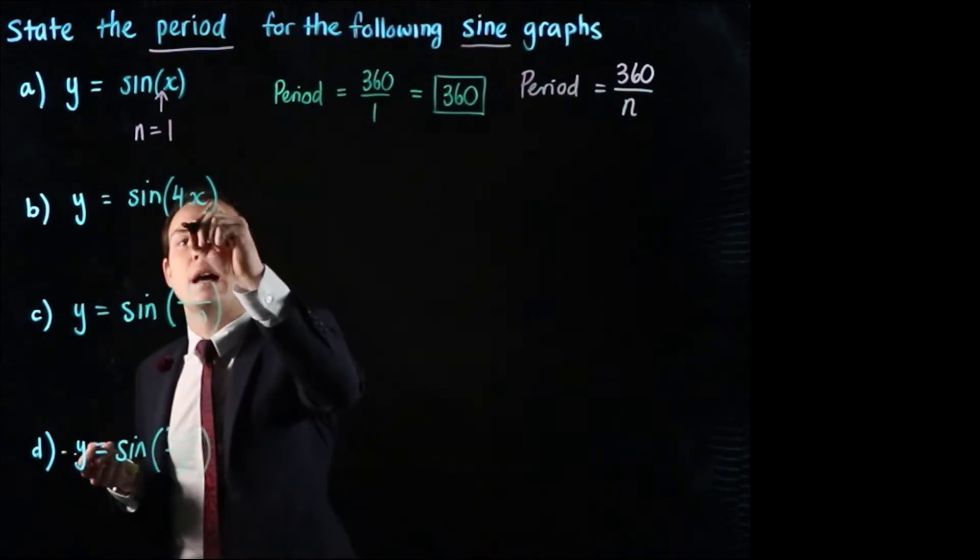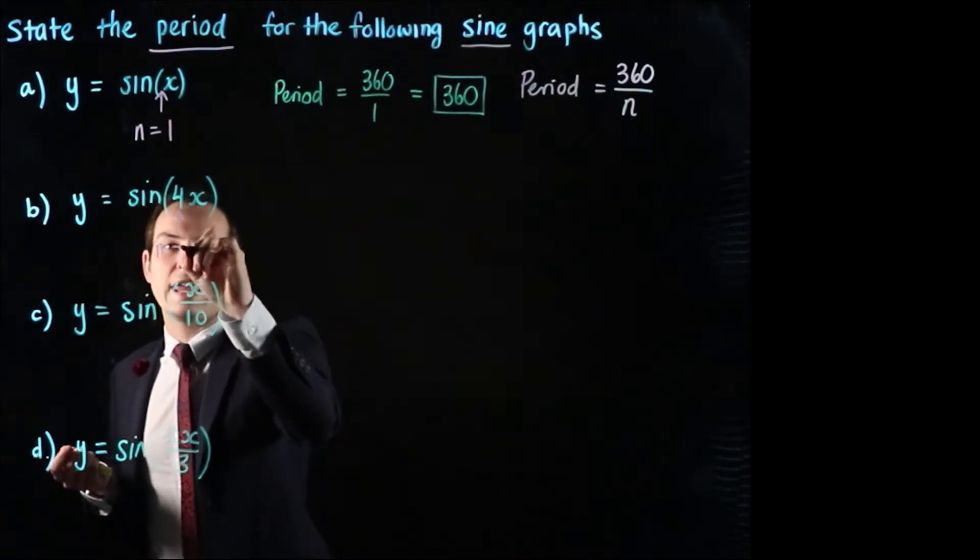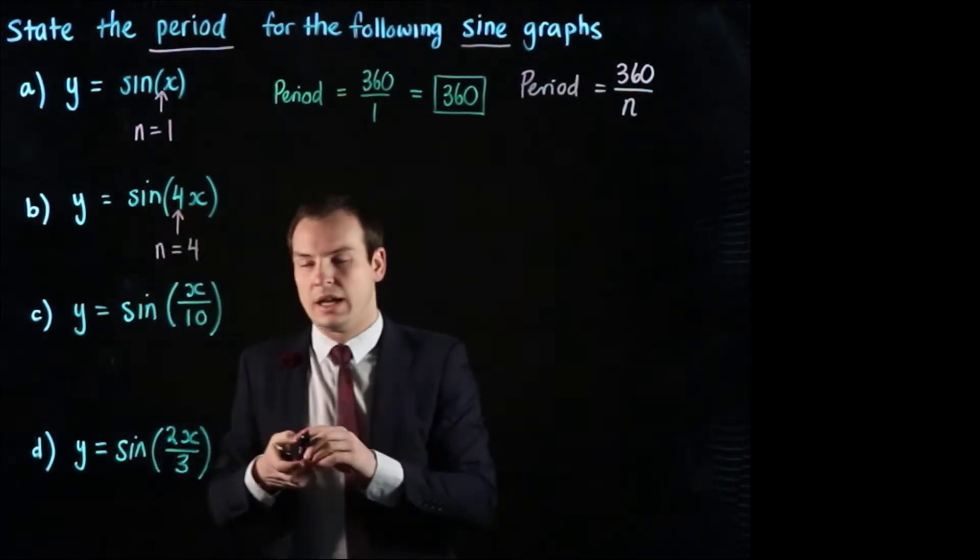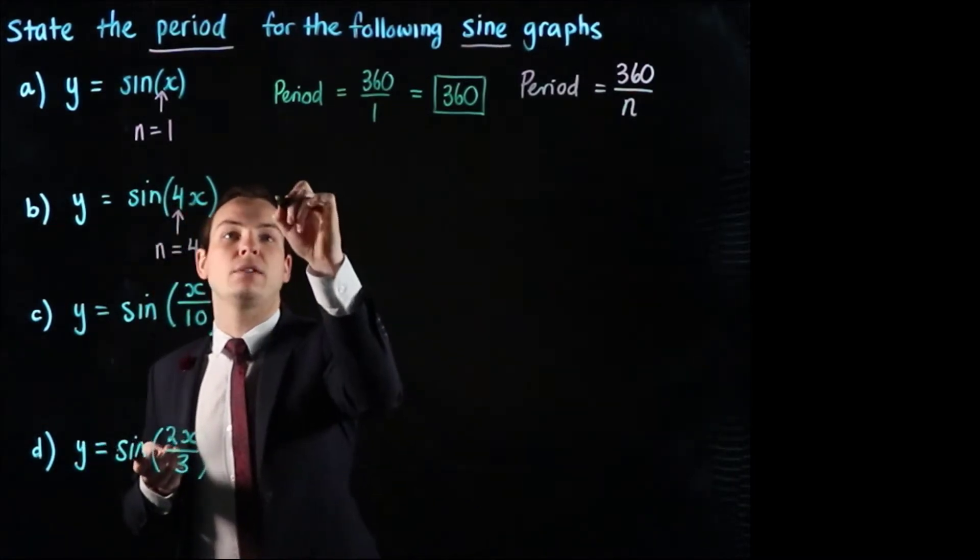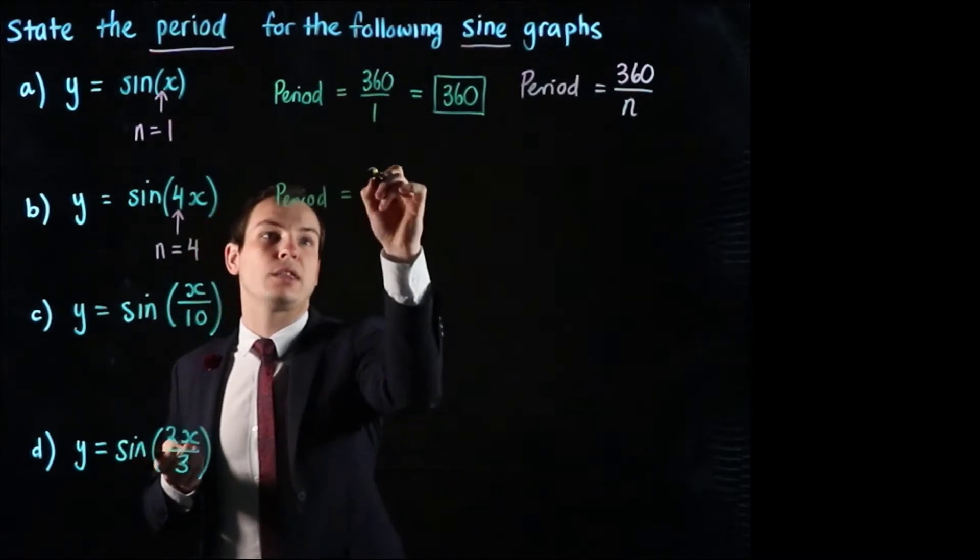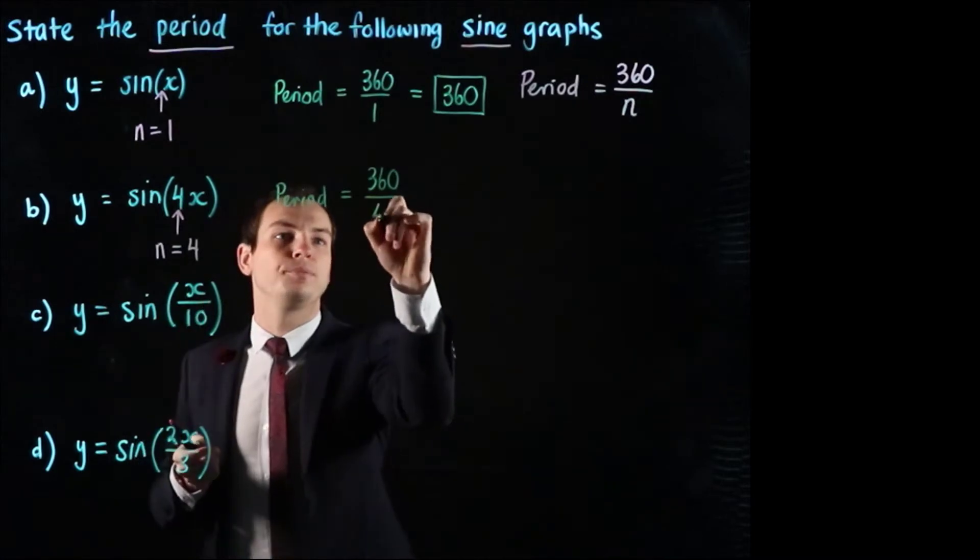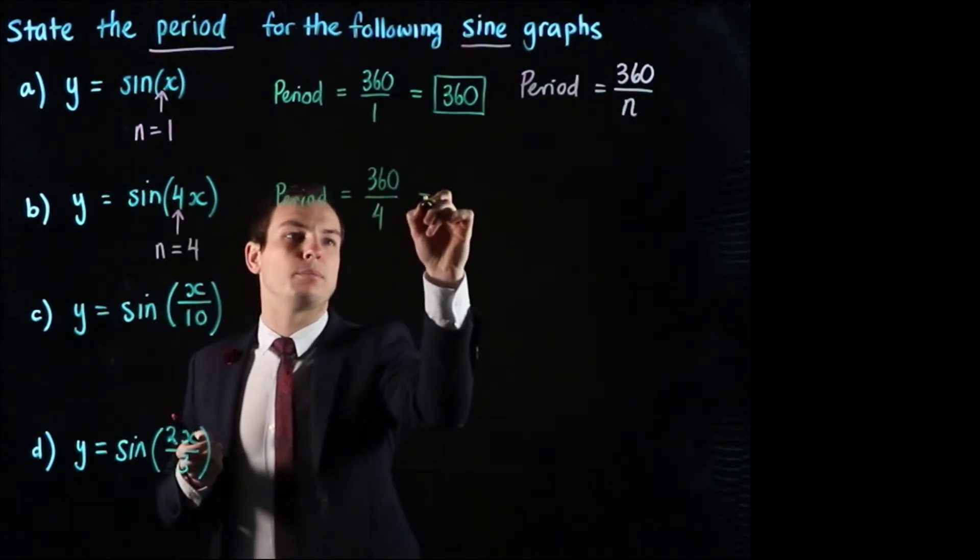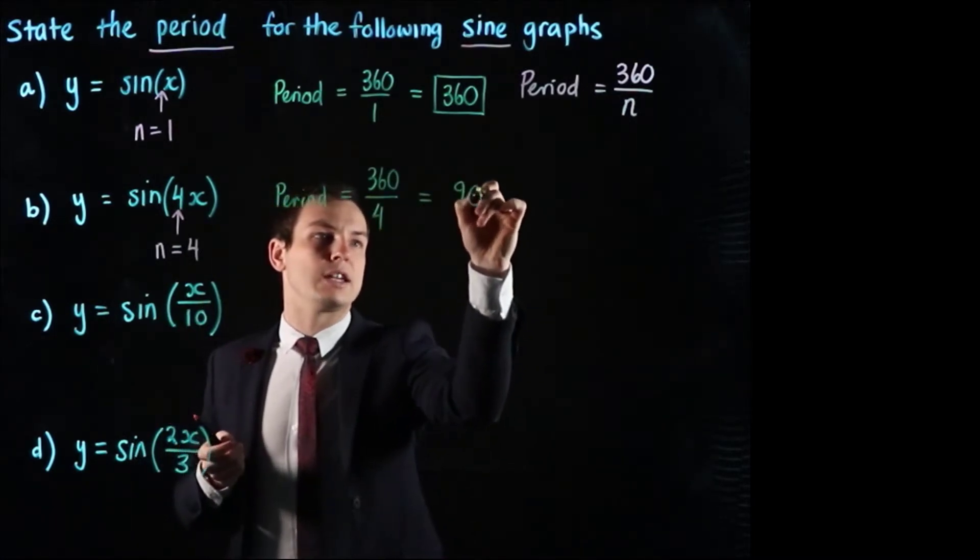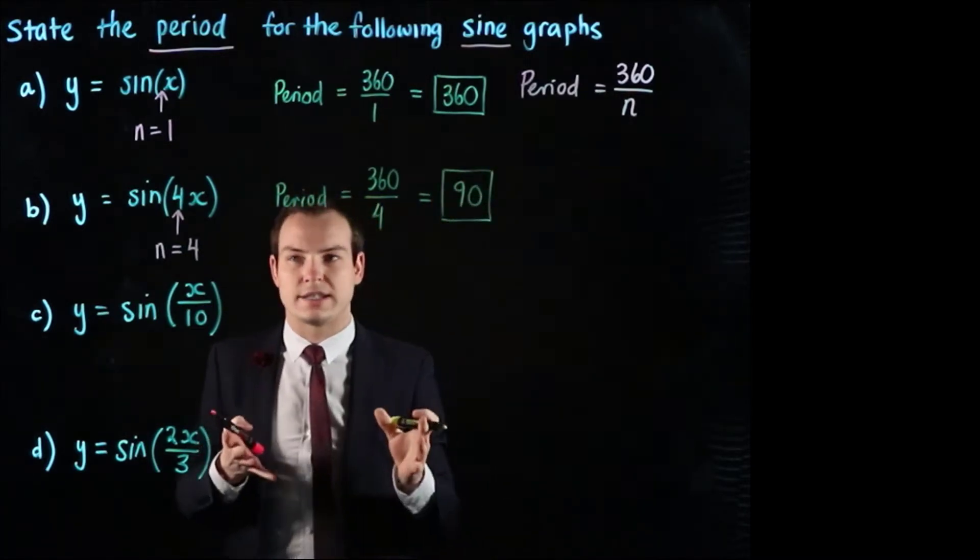For part b we can see the number multiplying x is 4. So we're going to say n equals 4. And that means when we get to calculating the period the period for b is going to be 360 divided by n which is 4. And 360 divided by 4 gives 90. So the second graph will have a period of 90.